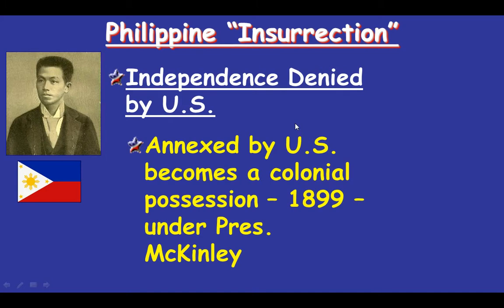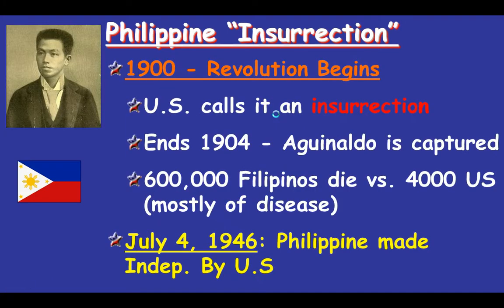What develops is an insurrection — the Filipinos rebel when the U.S. annexes them in 1899 under President McKinley. For them it's their revolution; the U.S. calls it the insurrection. It starts around 1900. In 1901, President Roosevelt takes over after McKinley is assassinated, and it ends in 1904 when Aguinaldo is captured. About 4,000 U.S. soldiers die, along with a huge number of Filipinos. The United States also employs reconcentration camps because the Filipinos use guerrilla warfare to resist. The Philippines remain a U.S. colony until 1946 — one year after the end of World War II.